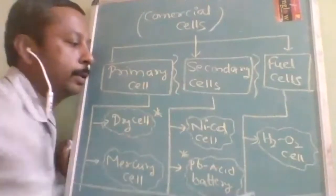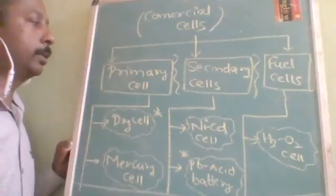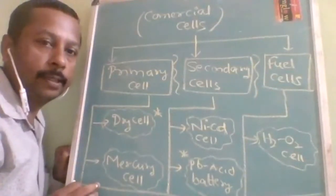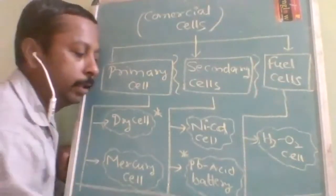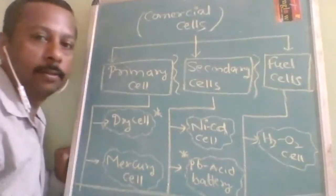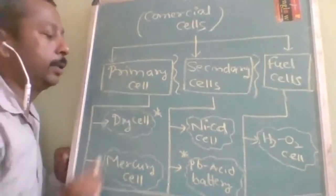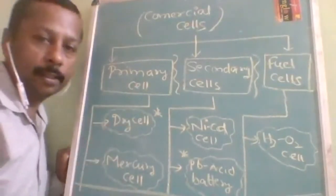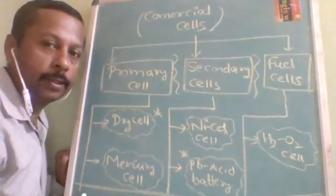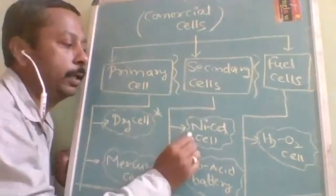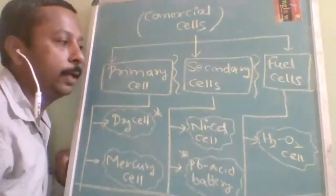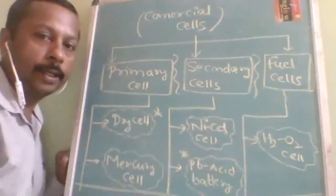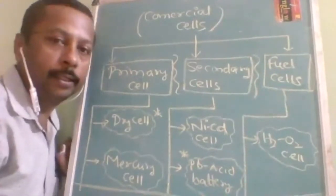As per our syllabus, there are five examples given in NCERT and tested in NTA examinations. Primary cell examples are dry cell and mercury cell. Secondary cell examples are nickel cadmium cell and lead acid battery. Fuel cell example is the H2-O2 cell. These are the examples we are going to study.